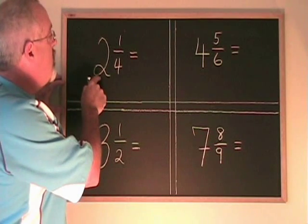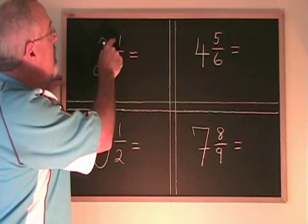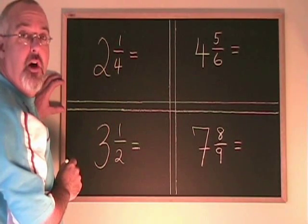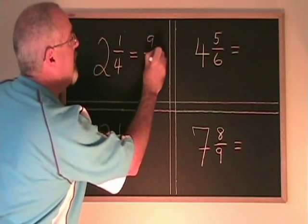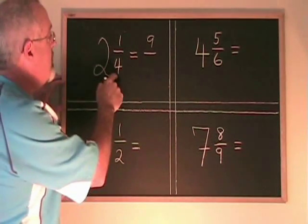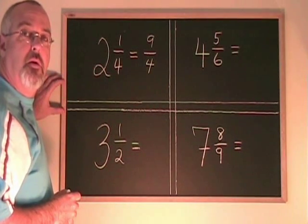Big number 2 times denominator 4 gives 8, plus numerator 1 gives 9. Our new numerator is 9. The new denominator is the same, it's 4. So 2 and a quarter equals 9 quarters.